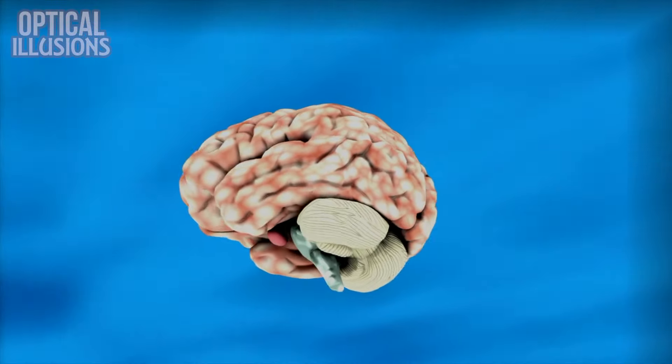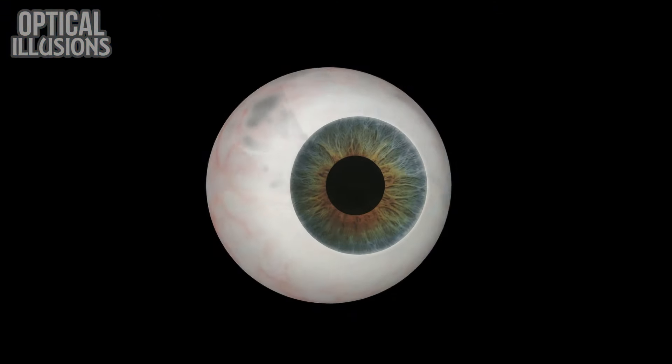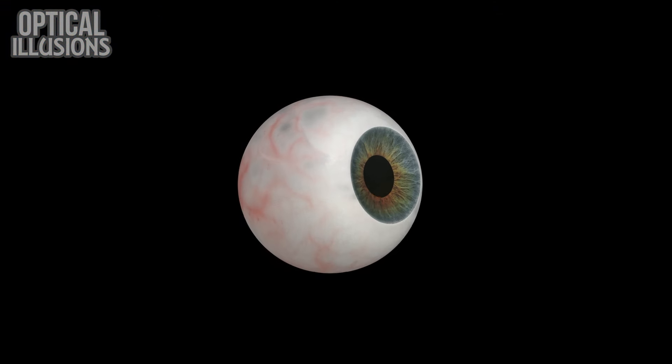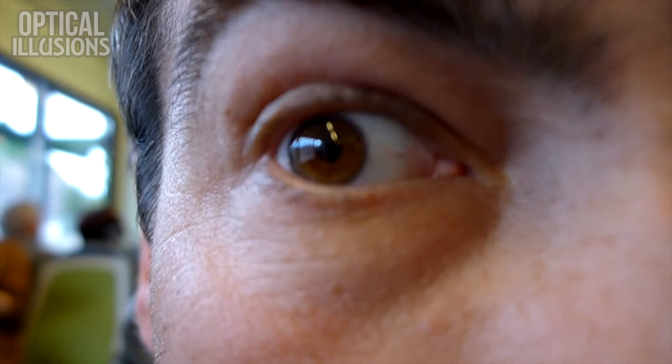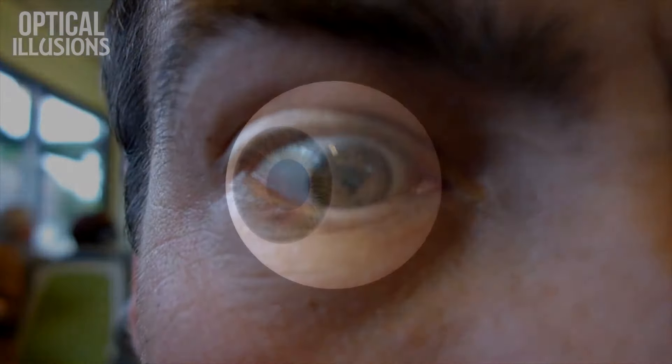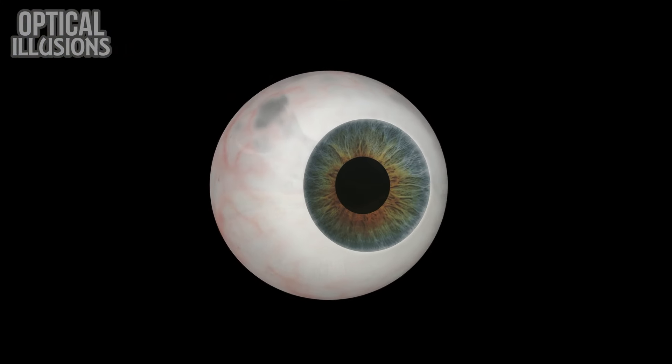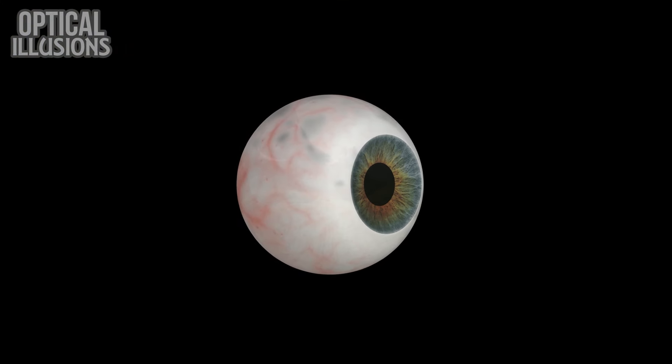This illusion fools our brain into thinking there's motion because of how our eyes move. While you may think that as you look around, your eyes move fluidly and smoothly, that couldn't be anything further from the truth. Our eye movements are actually pretty jolty, and it's those small, usually unnoticeable jolts along with the lag in our brain's visual processing that makes this image appear to move.